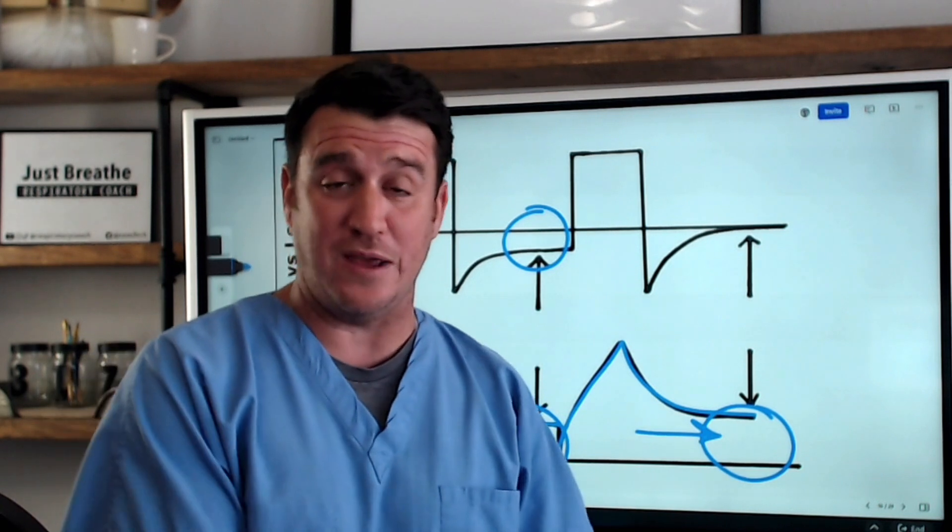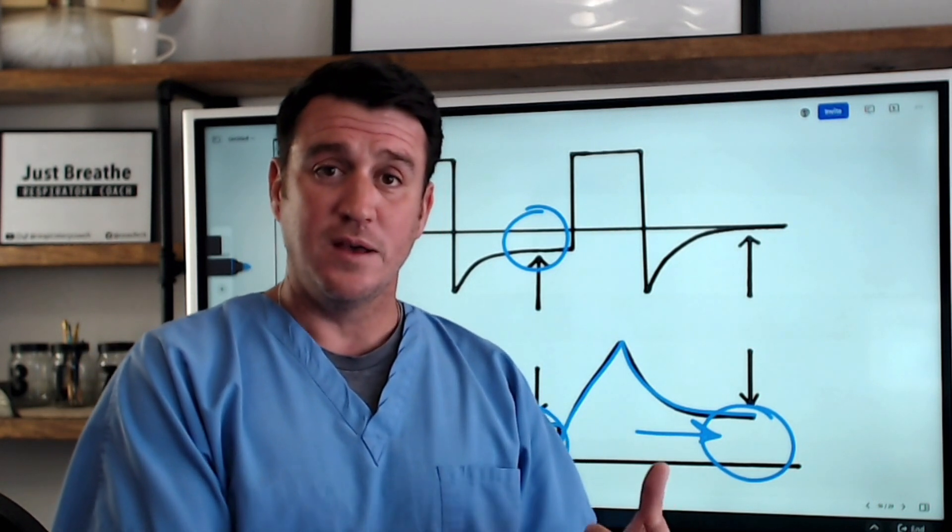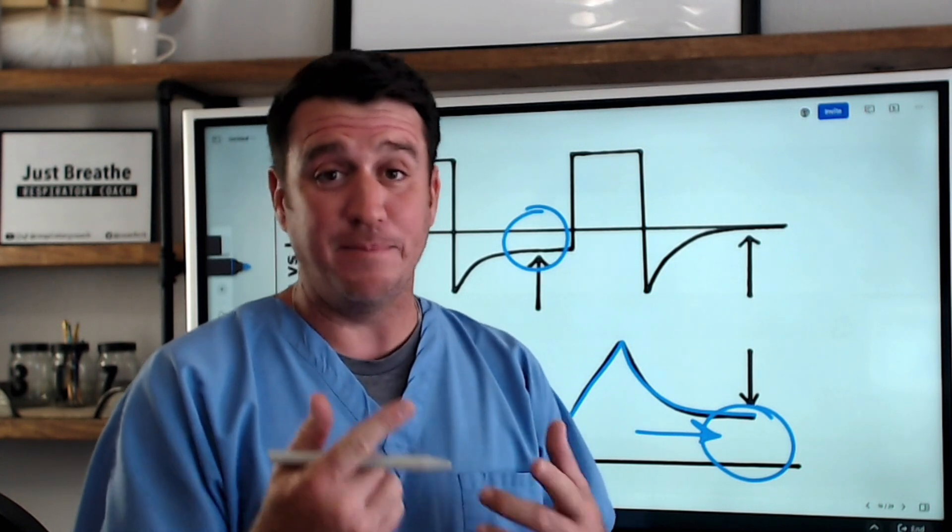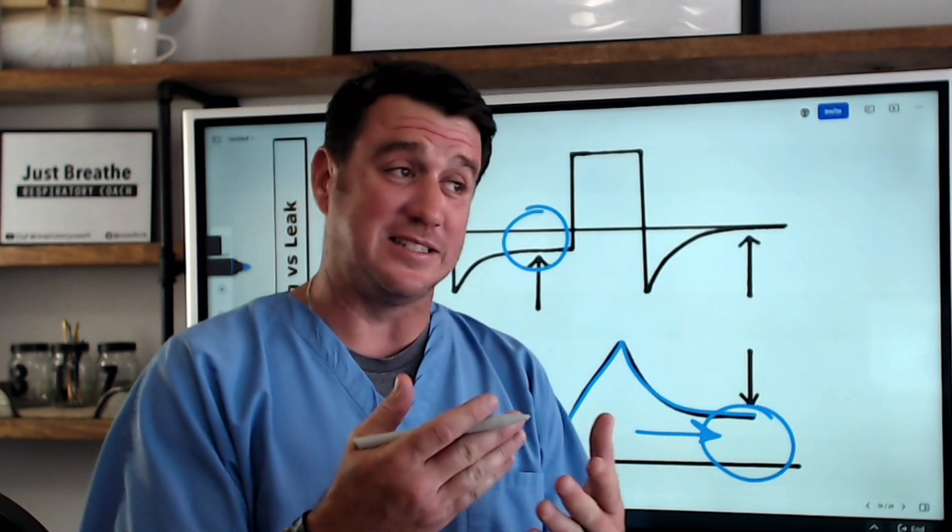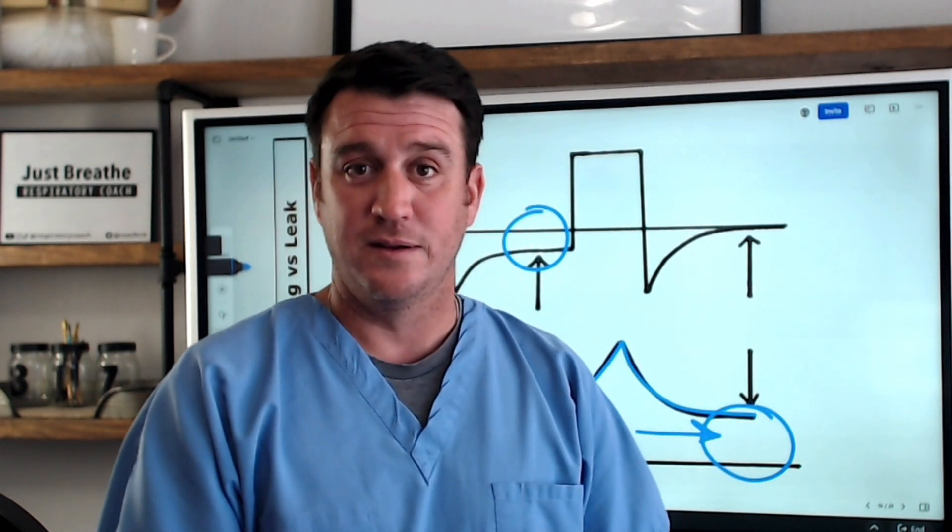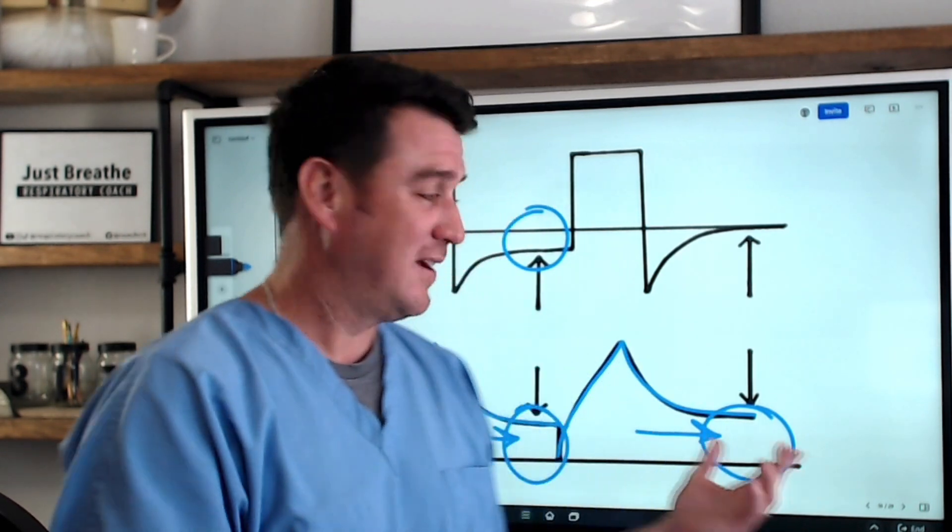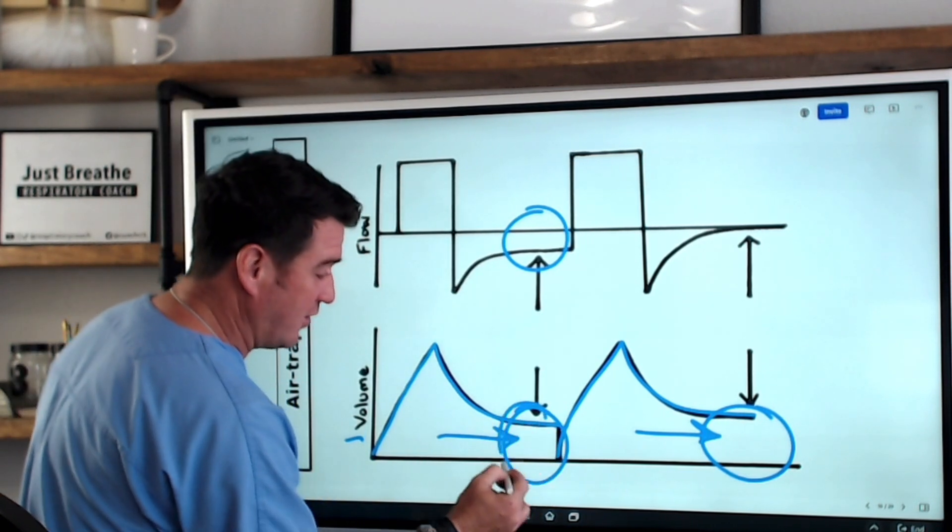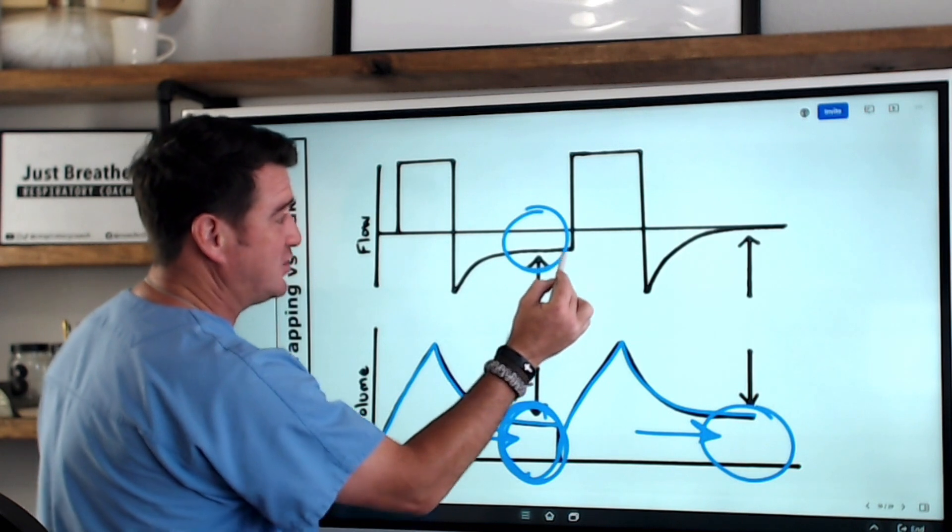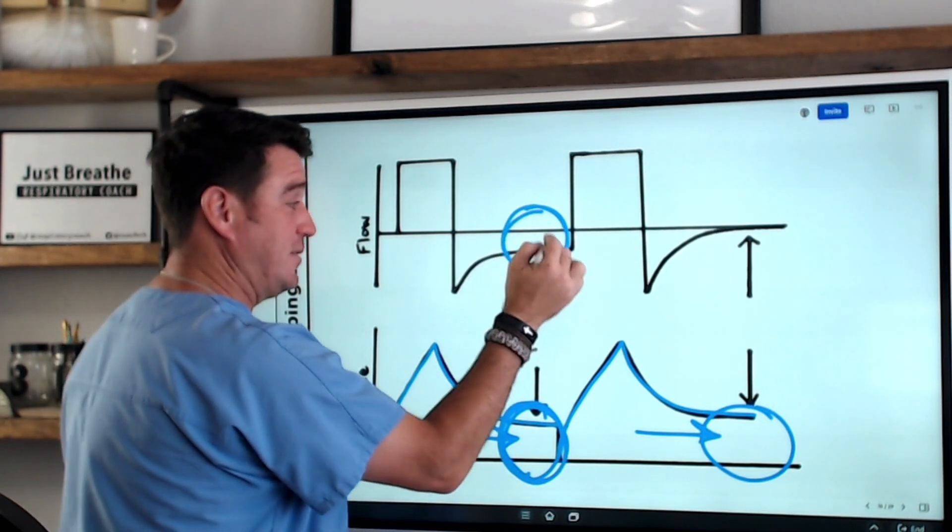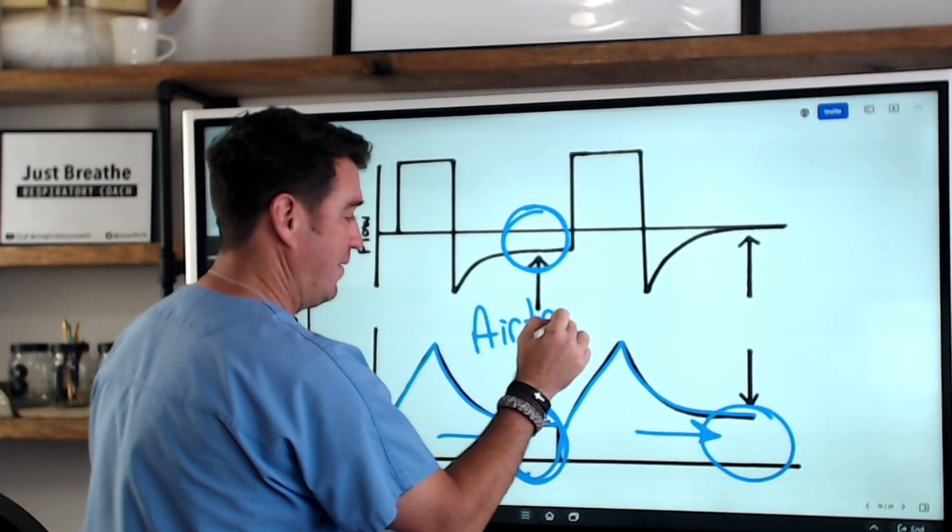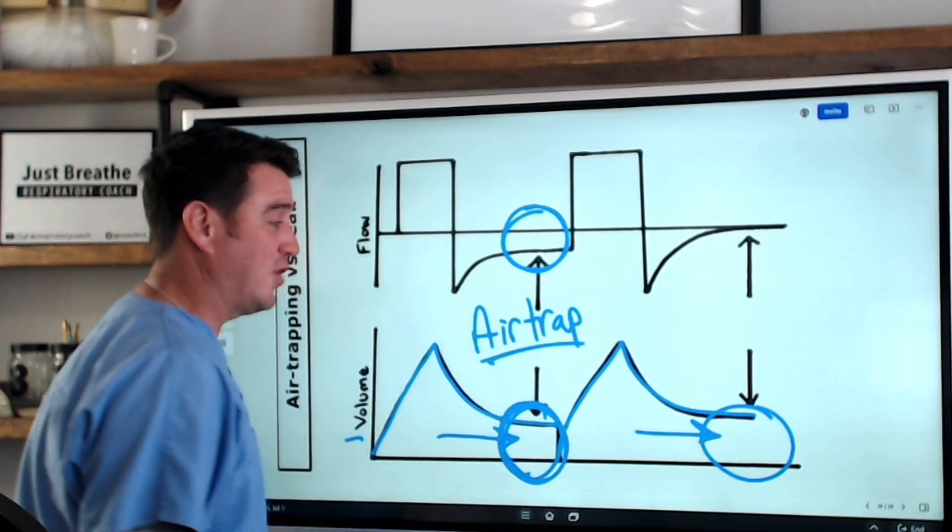So remember when we talked about the flow waveform, when flow fails to return to baseline, it's evidence of air trapping. If the volume waveform doesn't return to baseline, you have to look at your flow. If it doesn't return to baseline, this is air trapping.